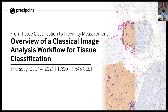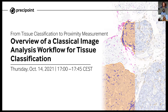Hello everybody. Welcome to our event: Overview of a Classical Image Analysis Workflow for Tissue Classification. This is part one of a three-part event called 'From Tissue Classification to Proximity Measurement,' where we will look at how AI software works based on practical use cases and shed some light on what different types of AI models to use for different types of research questions.